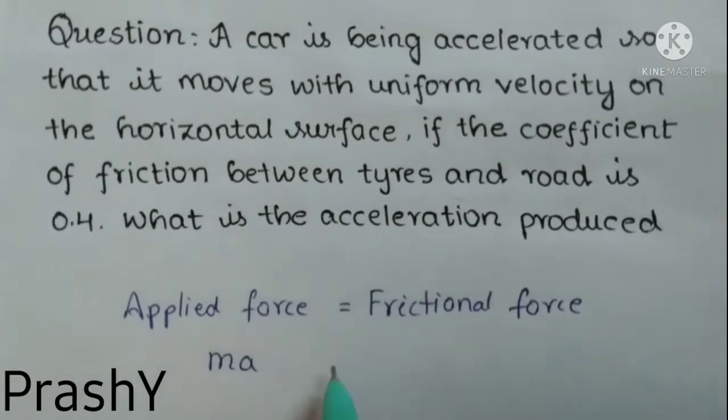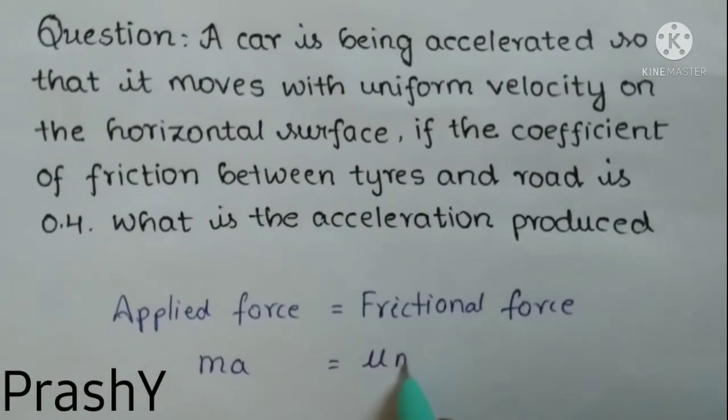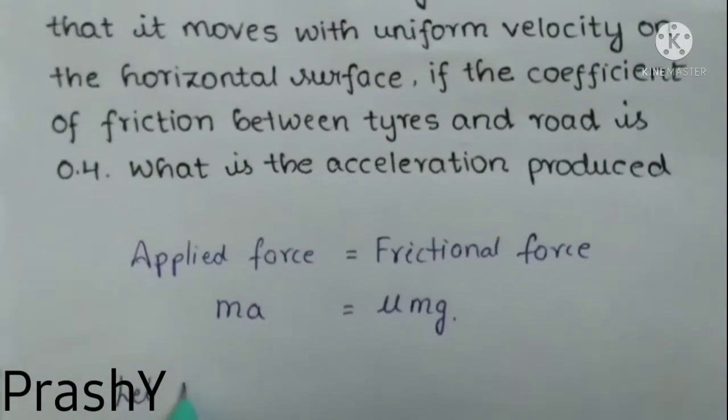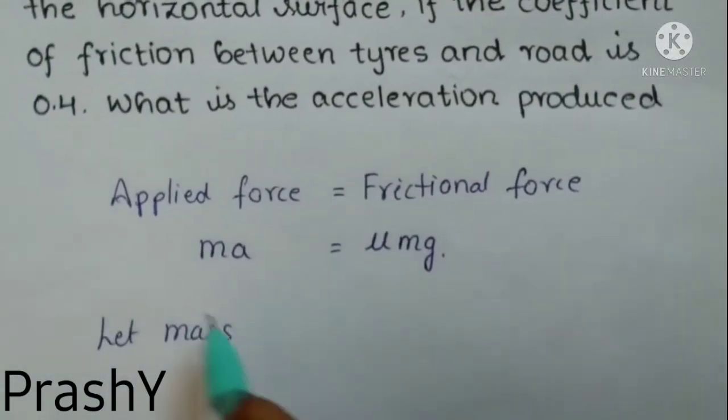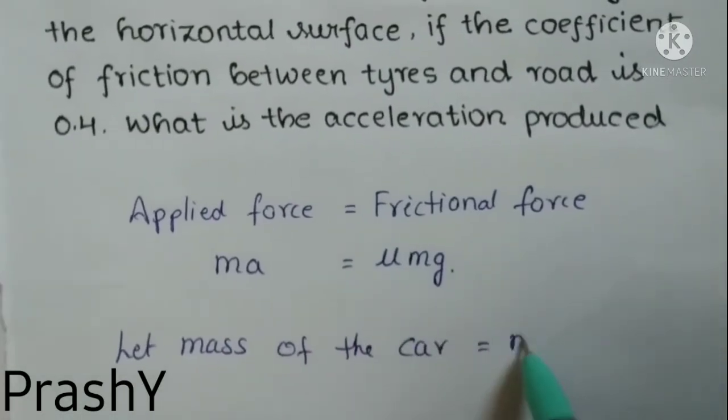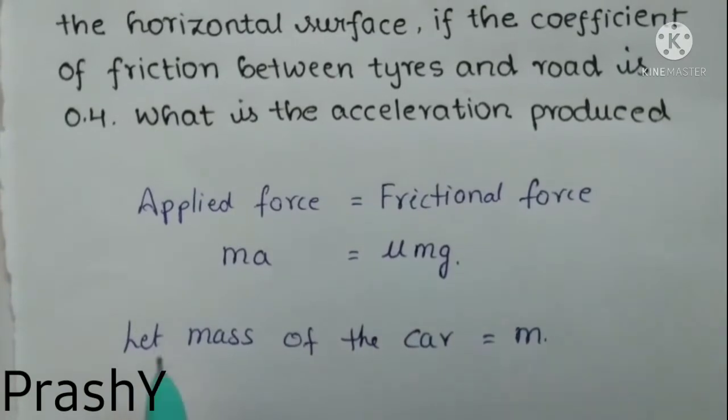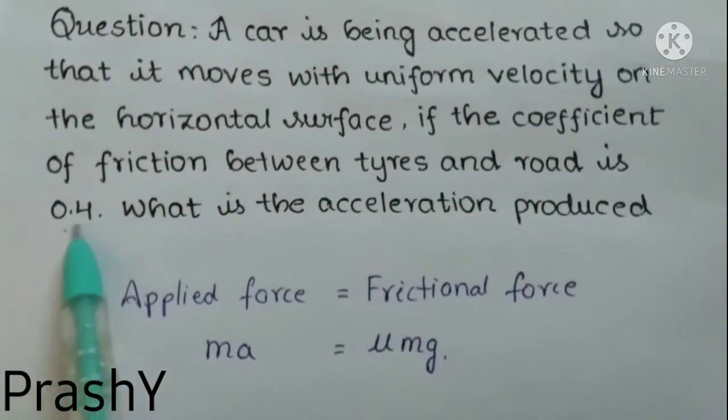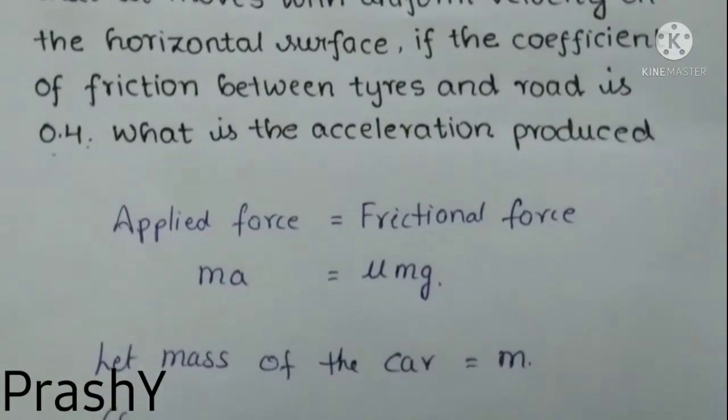Applied force is ma and frictional force is equal to μmg. Now let the mass of the car be m. The given coefficient of friction between the tires and the road is 0.4, so coefficient of friction μ equals 0.4.